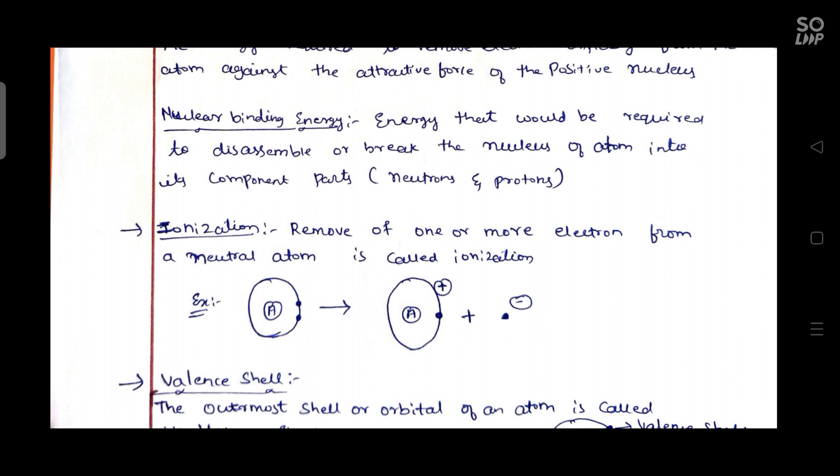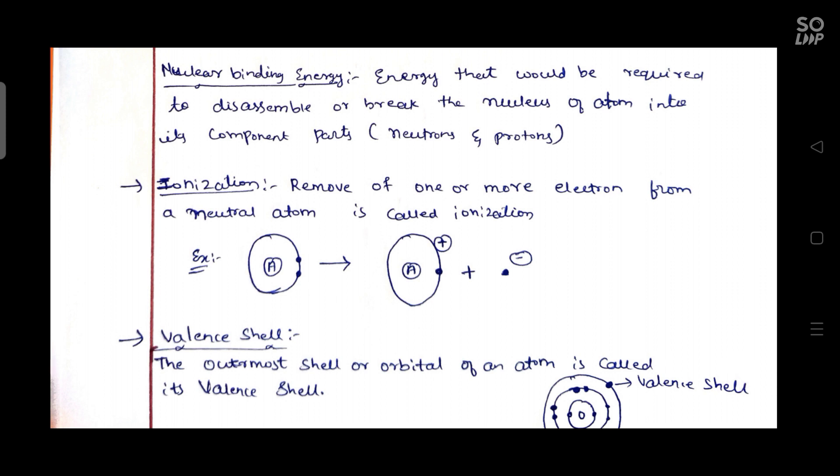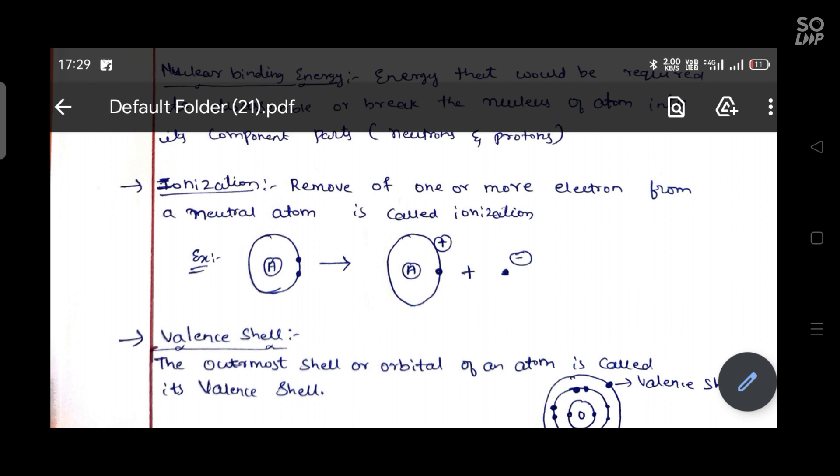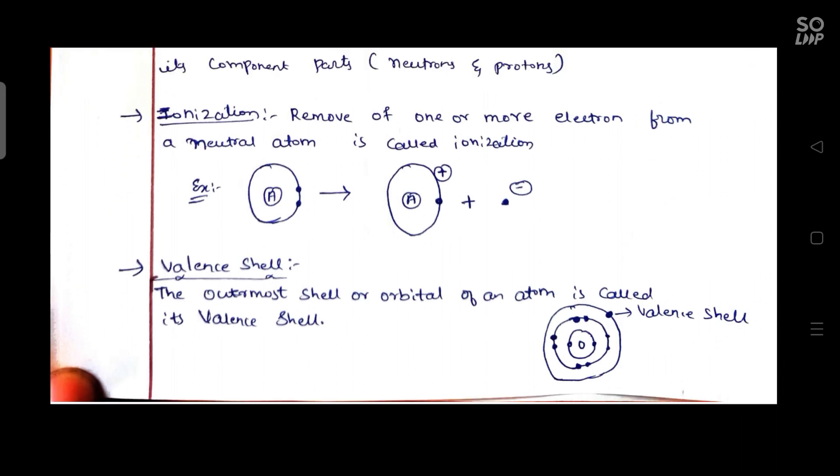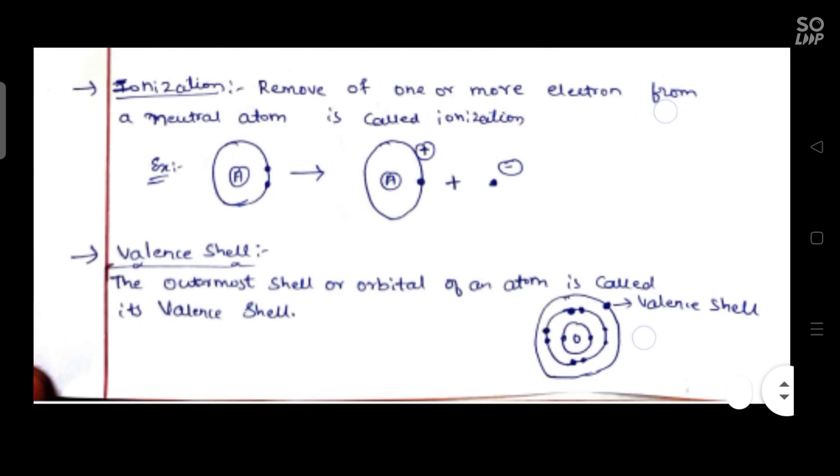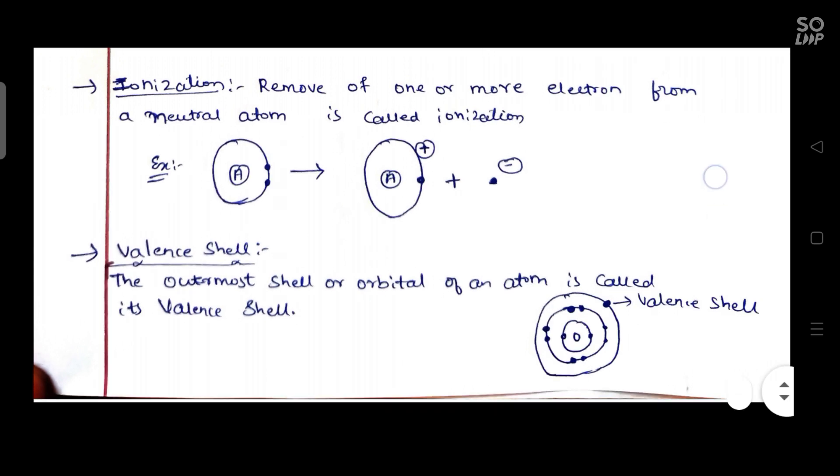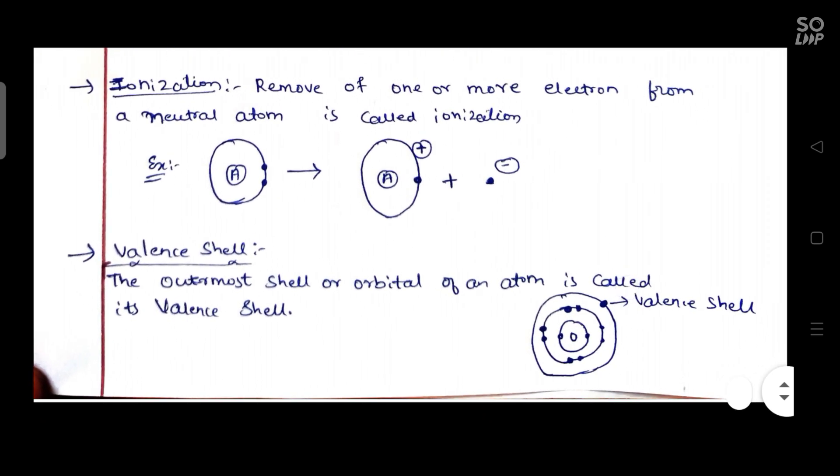Valence shell: the outermost shell is called valence shell. The outermost orbital of an atom is called valence shell.